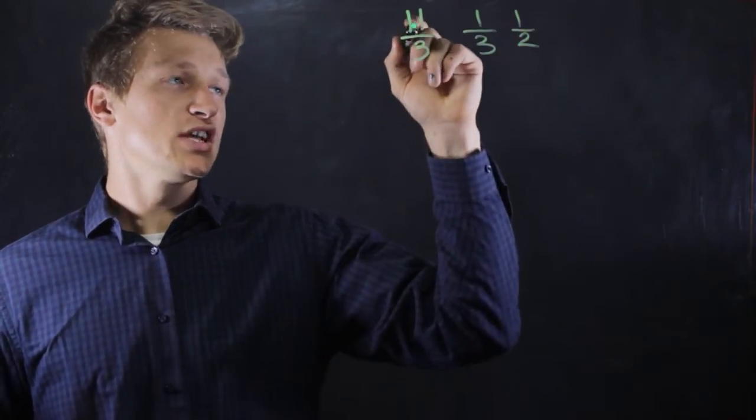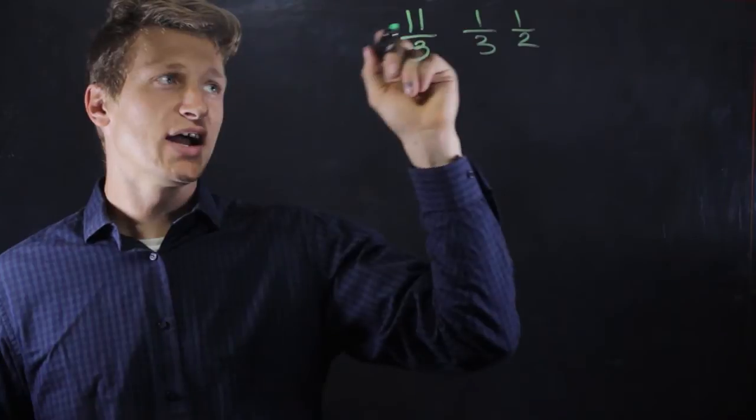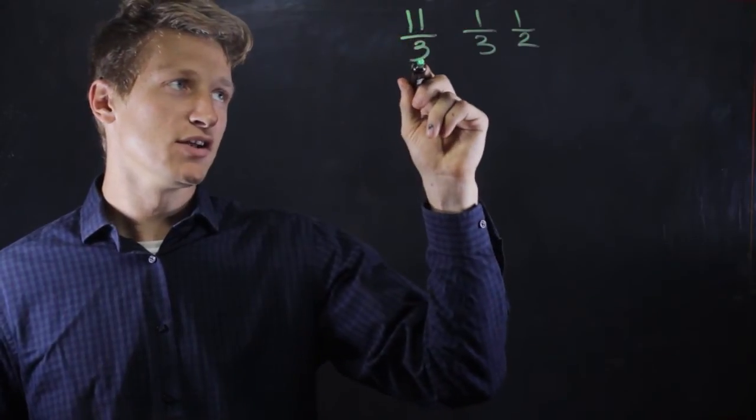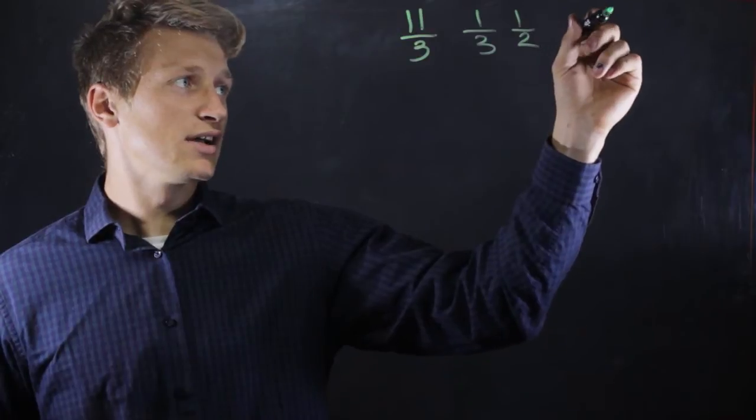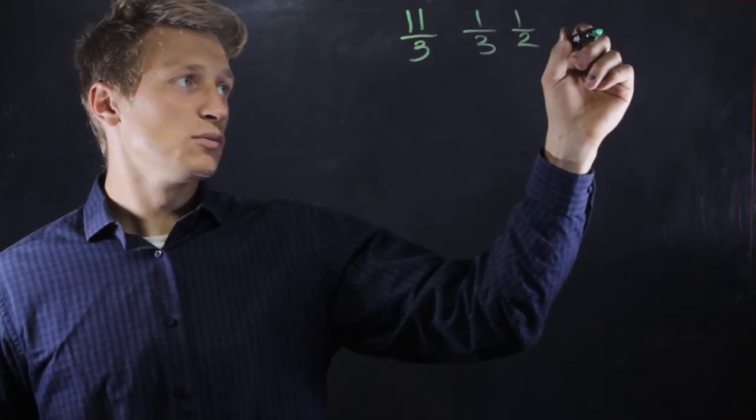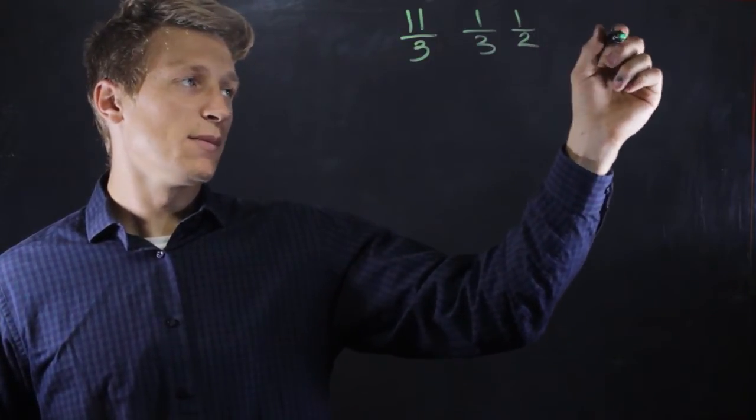We can change improper fractions to mixed numbers by dividing the numerator by the denominator, and then keeping the remainder as the new fraction numerator, and the denominator the same.